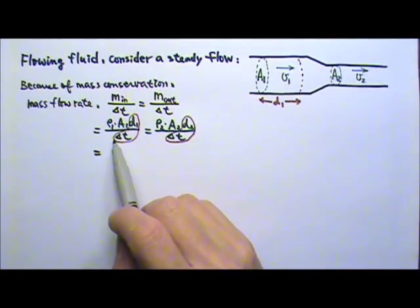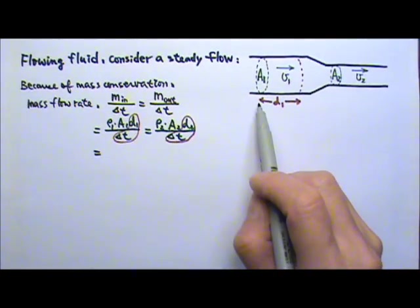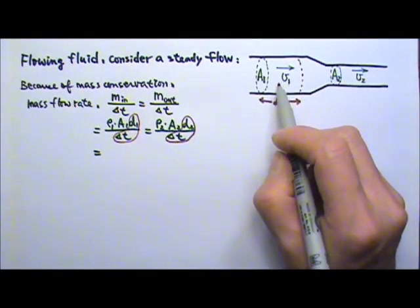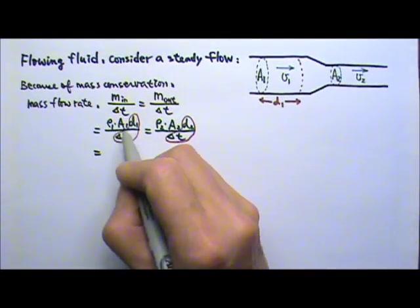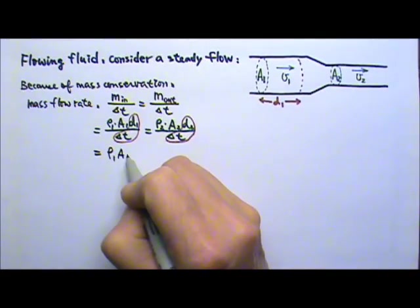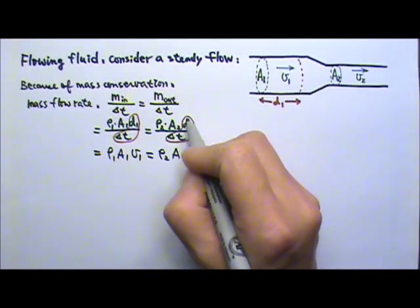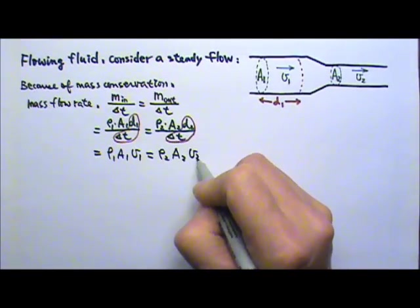And what is the distance traveled divided by the time? The distance traveled divided by the time is the speed, so this will be rho 1 a1 times v1 equals to rho 2 a2 times v2.